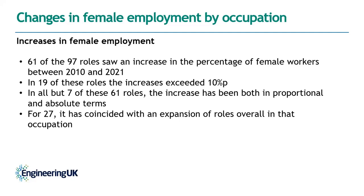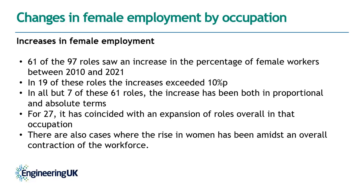In all but seven of the 61 roles that increased, the rise was in both proportional and absolute terms. For 27 of those, the increase coincided with an expansion of roles overall — for example, IT and telecommunications professionals saw total roles increase by more than 90,000, with more than half of those new roles taken up by women. There are also cases where the rise in women occurred amidst overall contraction: the number of female electronics engineers increased by 2,500 but the number of men decreased by 15,000, resulting in an overall decline of around 12,500.